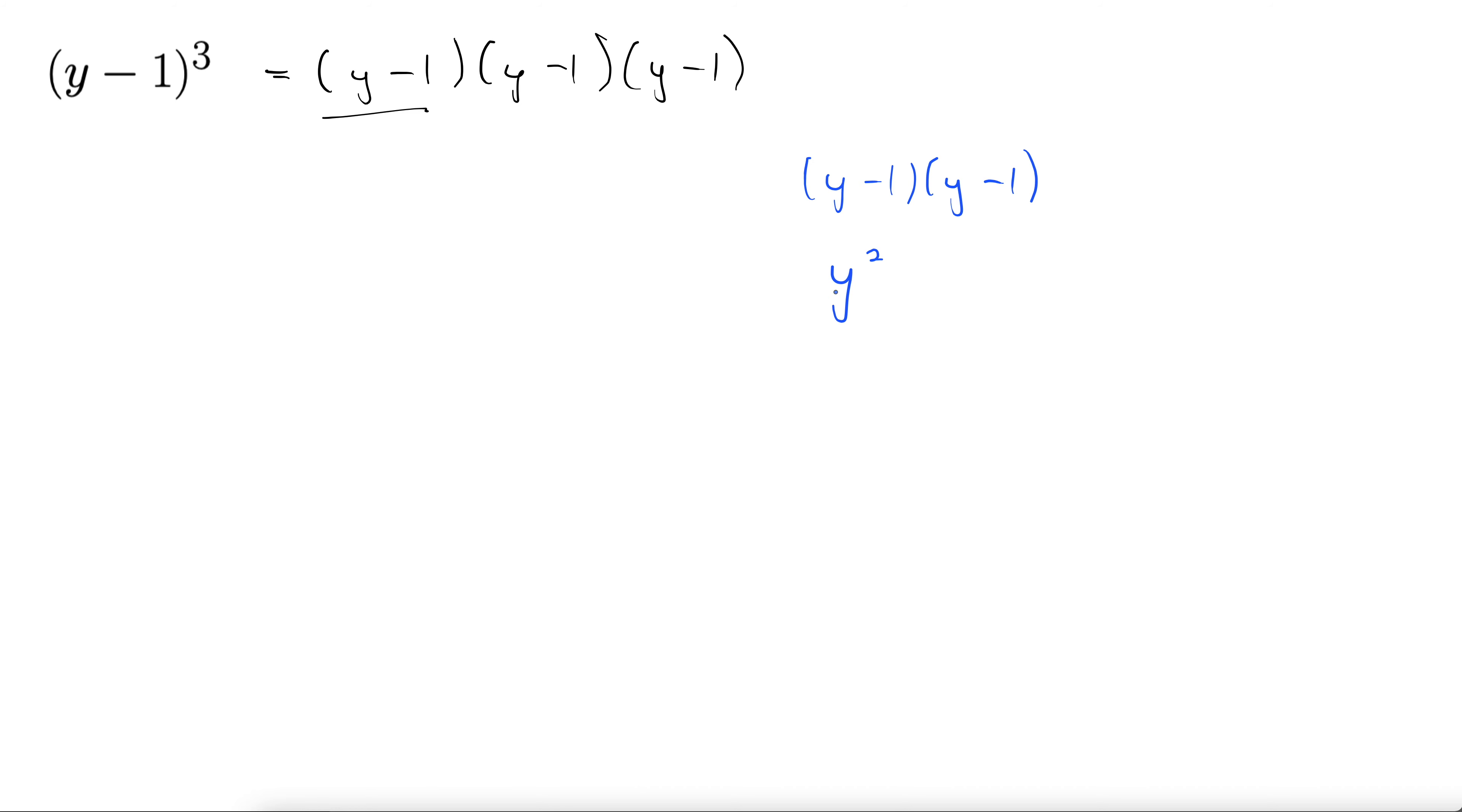I get y squared, there's my first. Outside, minus y. Inside, minus y. Last, minus 1 times minus 1 is plus 1. So y squared minus 2y plus 1. So all of this multiplied to this expression here, y squared minus 2y plus 1.